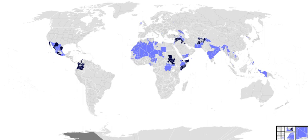Network-centric warfare is essentially a new military doctrine made possible by the Information Age. Weapons platforms, sensors, and command and control centers are being connected through high-speed communication networks. The doctrine is related to the revolution in military affairs debate. The overall network which enables this strategy in the United States military is called the Global Information Grid.